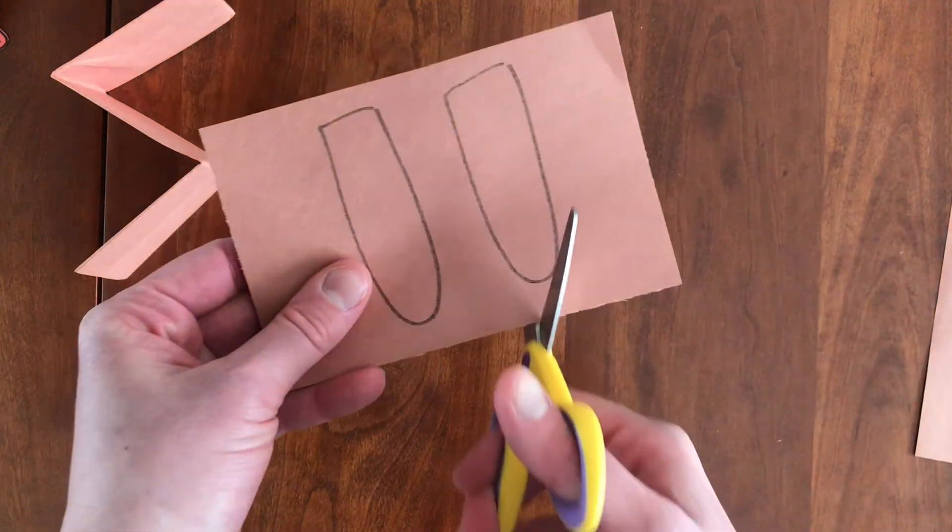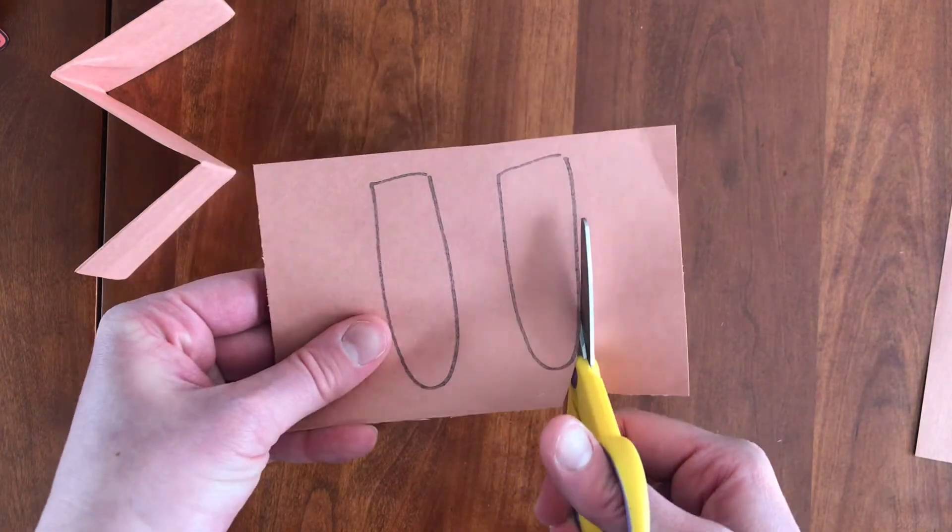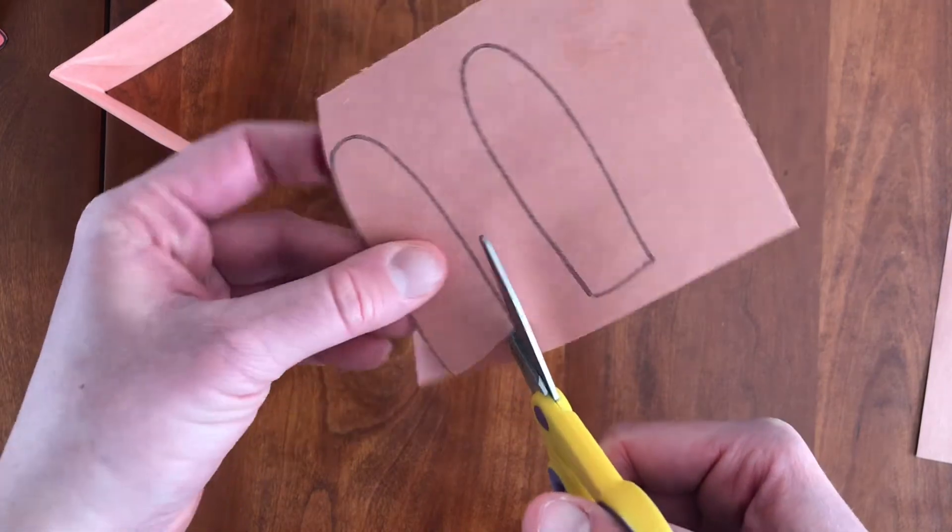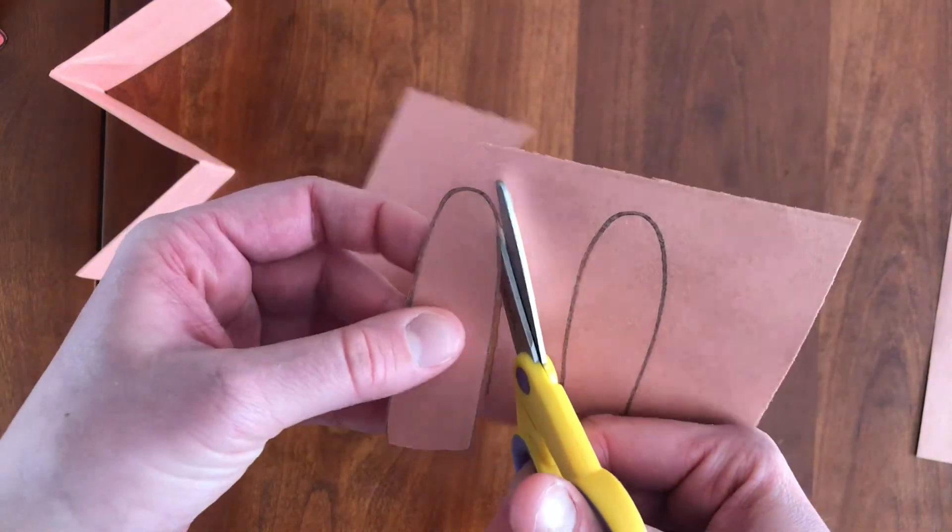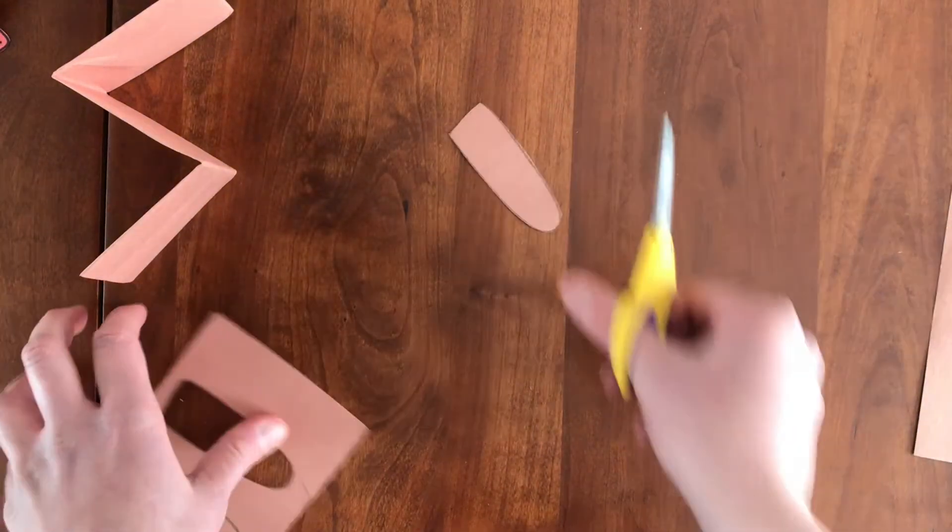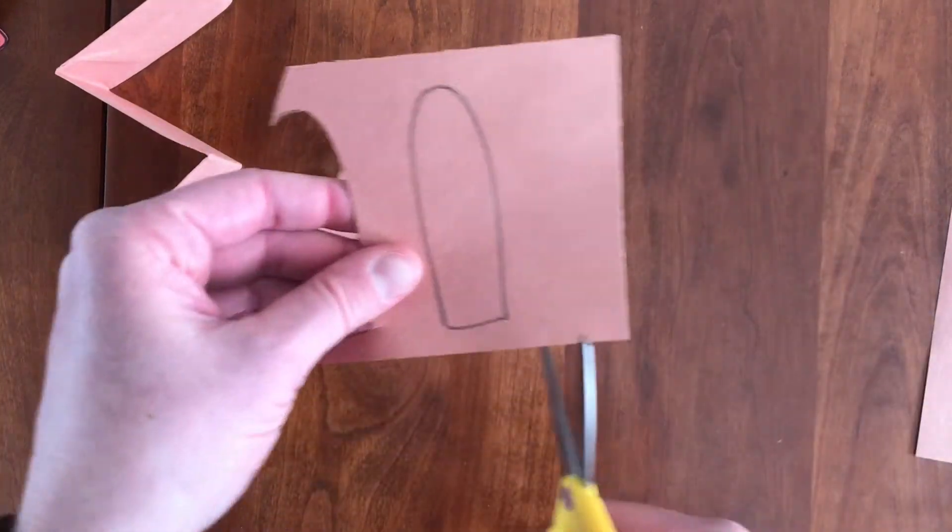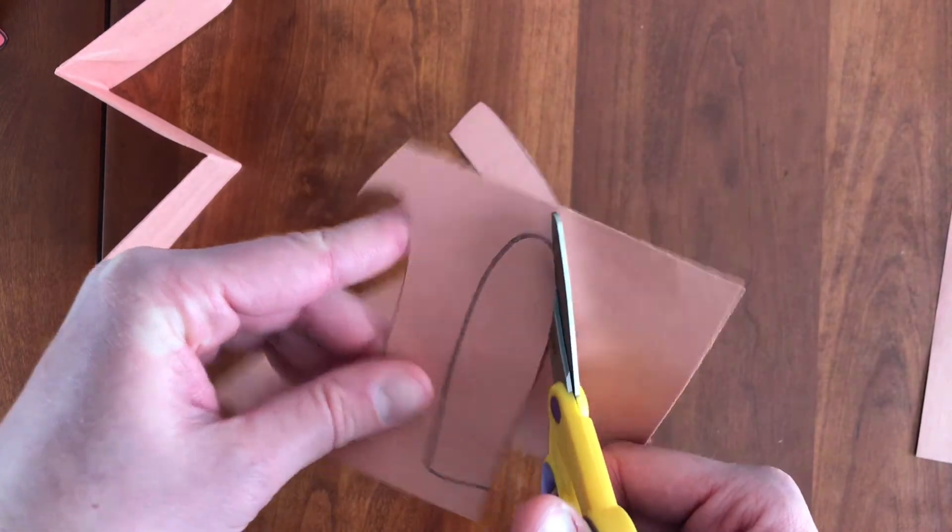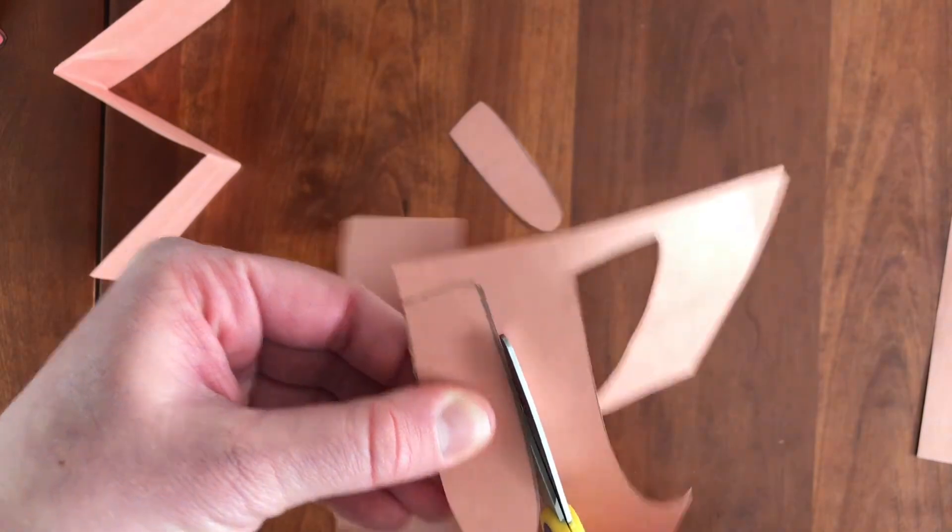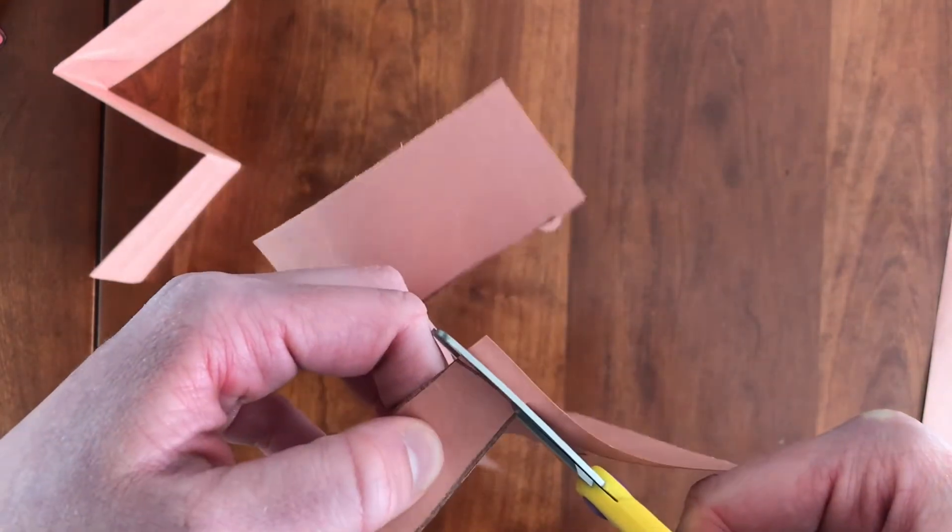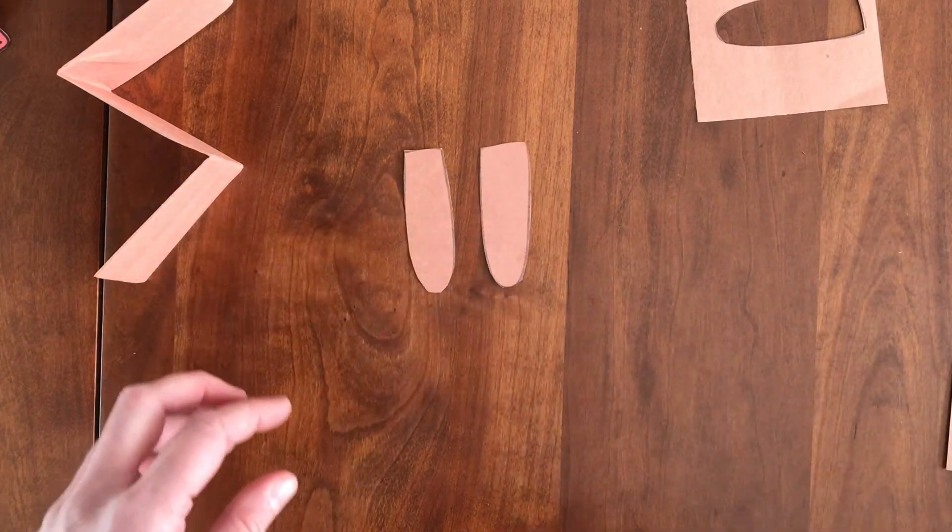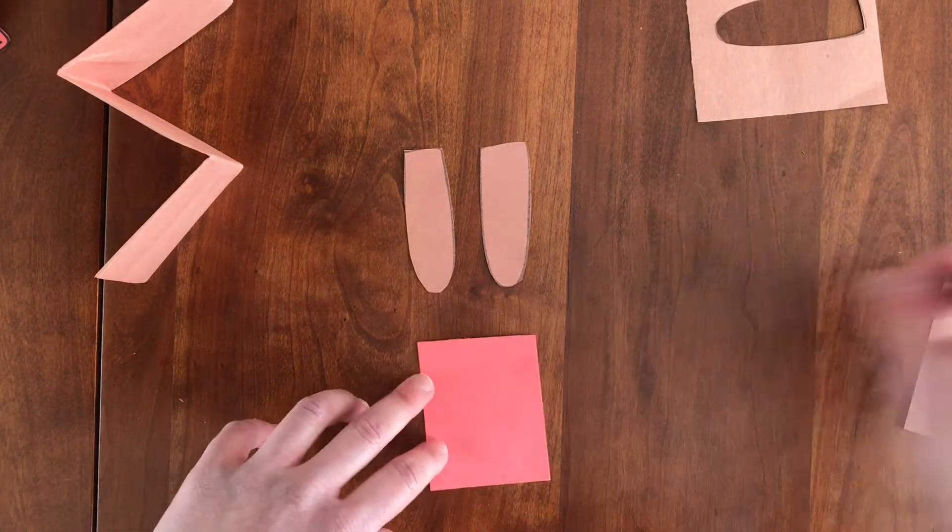So now with that, you'll cut them out. You can hear my puppy crying in the background. He wants to go out. So there's one. And here's the other. Okay, so those are your two ears. And then while we're at it, let's go ahead and add the tongue too.